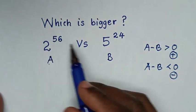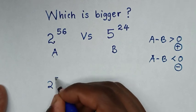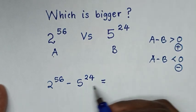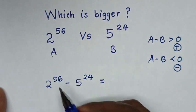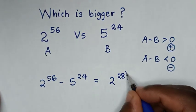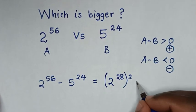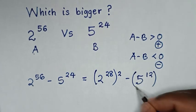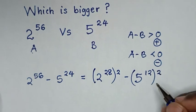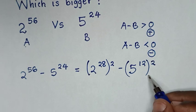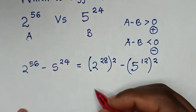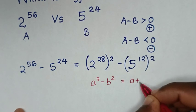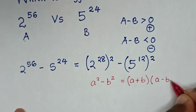From now let's find the difference. So 2 power 56 minus 5 power 24. We make this in the form of a perfect square. So 2 power 56 is the same as 2 power 28 squared, and 5 power 24 is the same as 5 power 12 squared. This is in the form of a perfect square, so we apply the rule: a squared minus b squared equals (a plus b)(a minus b).